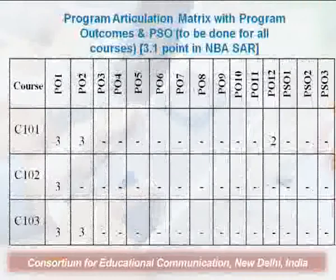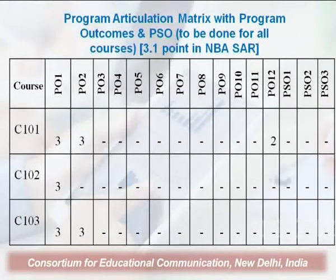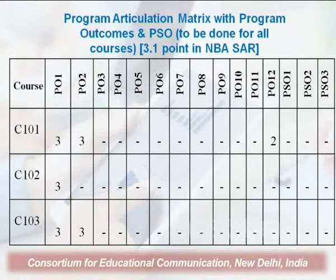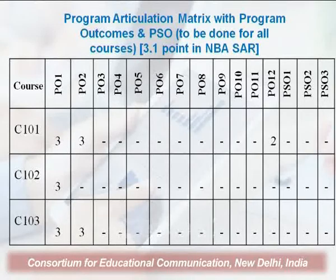On this slide, on the horizontal line we have the program outcomes — from PO1 to PO12 — and we have 3 program specific outcomes: PSO1, 2, and 3. On the vertical line on the left-hand side, we have the courses C101, C102, and C103.